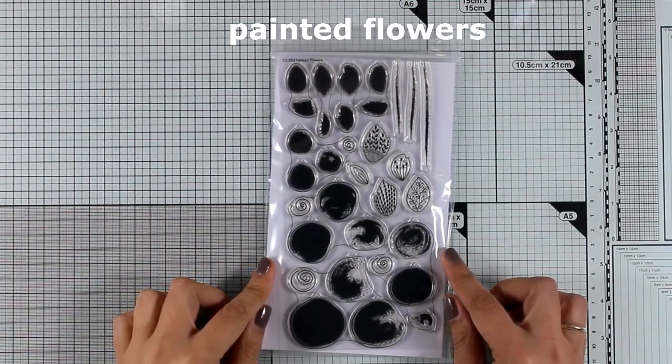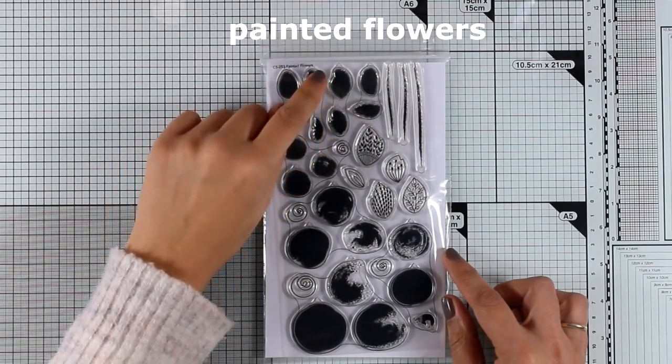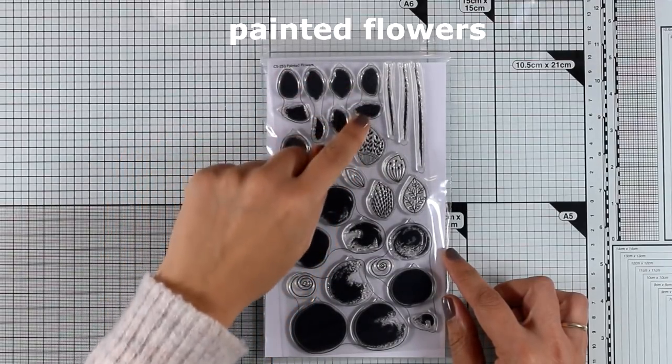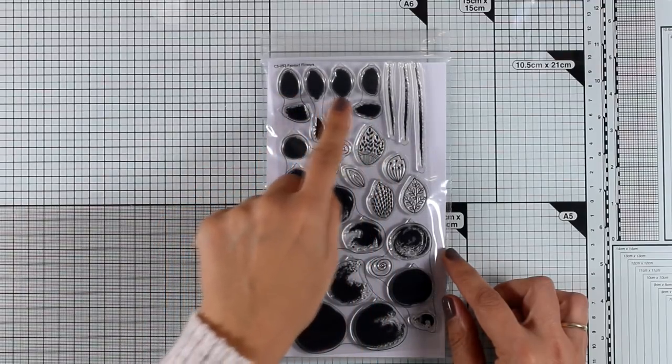Let's start with the larger stamps. This is called Painted Flowers. It is a layering set where you get many different layers to stamp a flower. You use different inks to stamp one on top of the other and you get beautiful results.